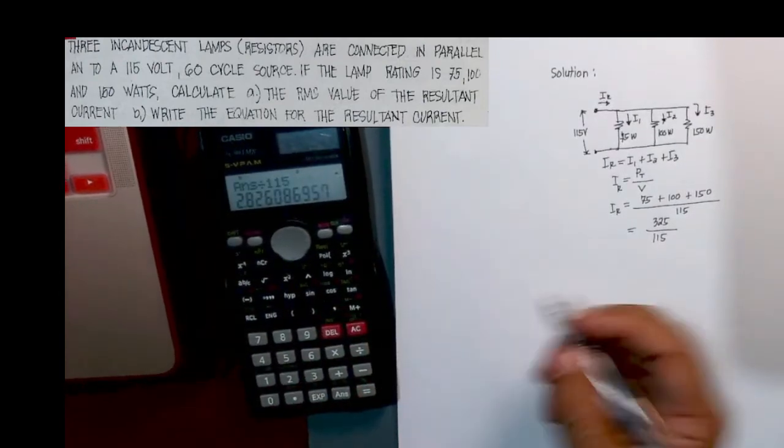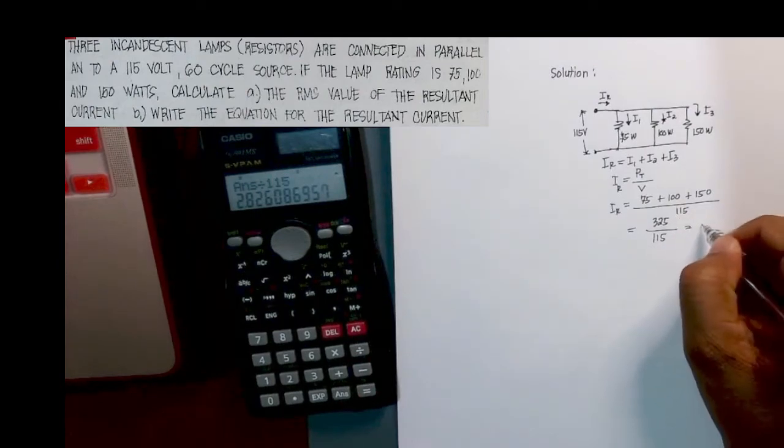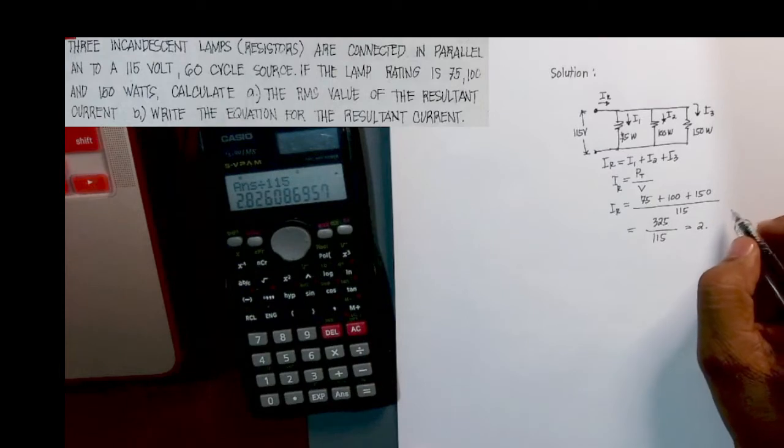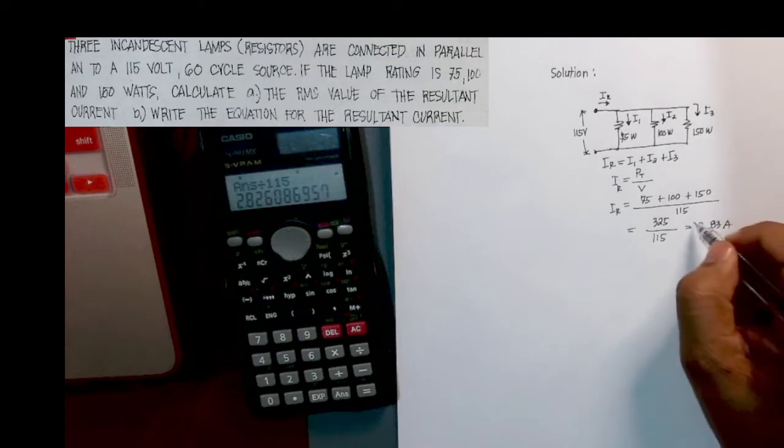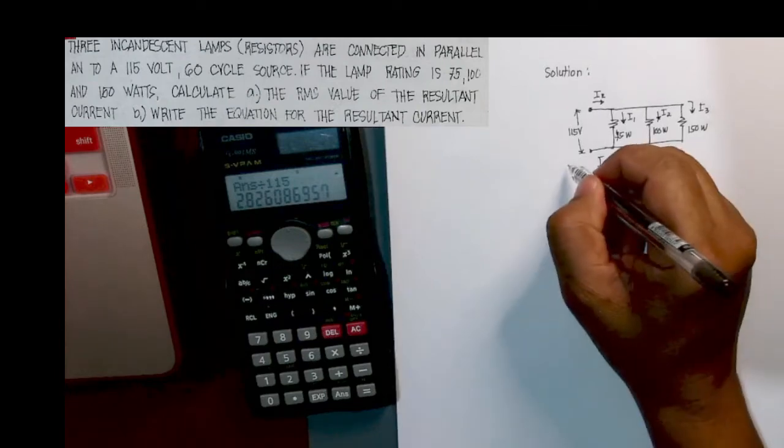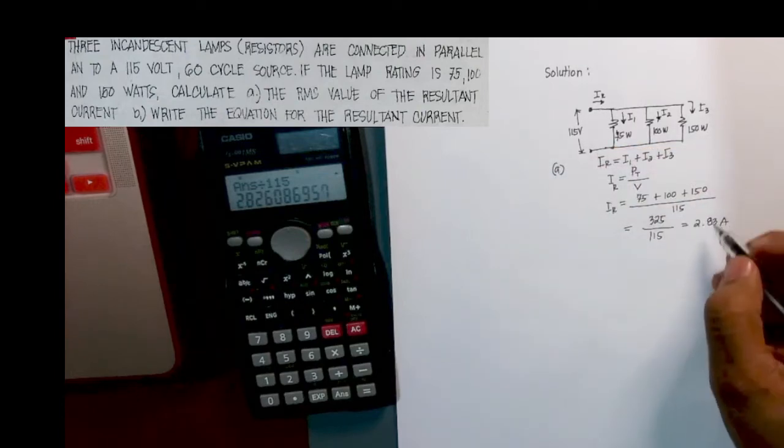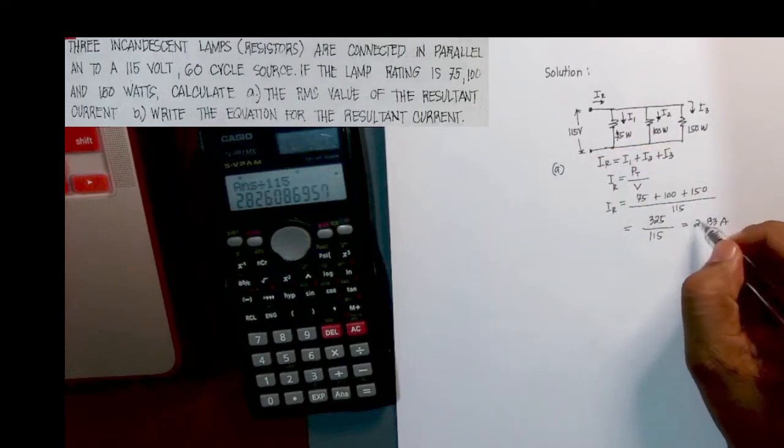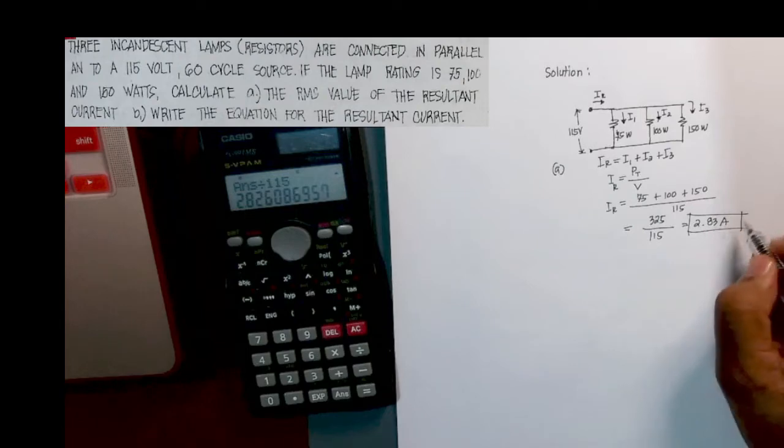And it will give us 2.826 or 2.83 ampere. So actually for letter A, we have already solved for the value of the resultant current in RMS. This is the effective value or the RMS value of the total current.